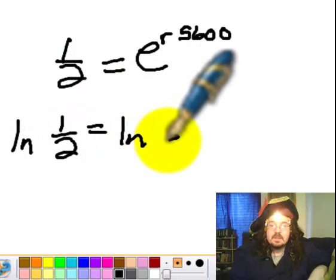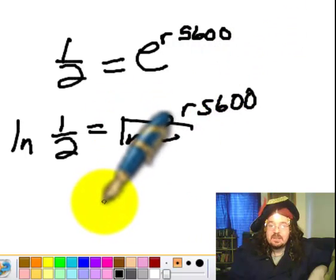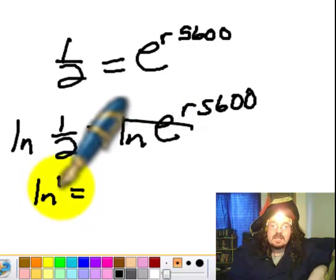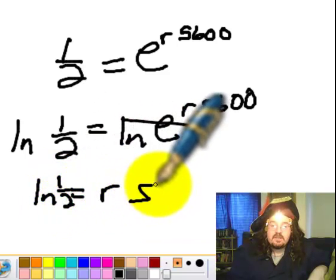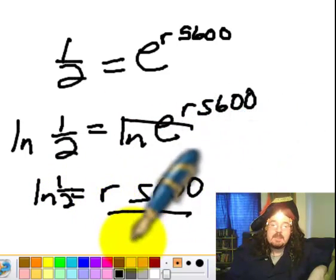And those cancel, and I get ln(1/2) equals R times 5,600. And I divide by 5,600.